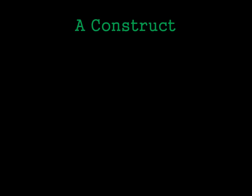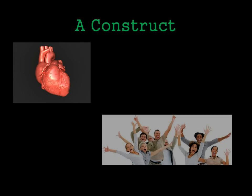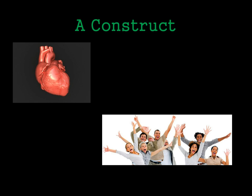A construct is something that's very difficult to measure and probably doesn't really exist in a physical form. Heart rate is not a good example — heart rate is easy to measure; we can feel our heartbeat and we can actually see it if we use an echocardiogram. But a construct that is difficult to look at is something like happiness, because you can't physically see if someone's happy. Sometimes there might be outward signs, such as smiling, but it's not actually that easy to measure.